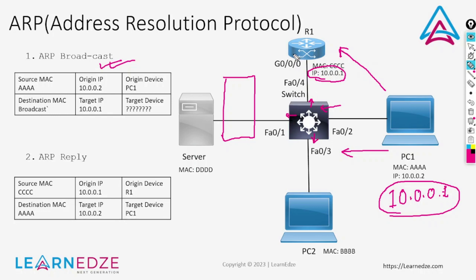When router R1 reads this message, it will say 'Yes, I am 10.0.0.1' and it will send an ARP reply to the switch. This ARP reply will say 'Yes, I am 10.0.0.1 and here is my MAC address.'